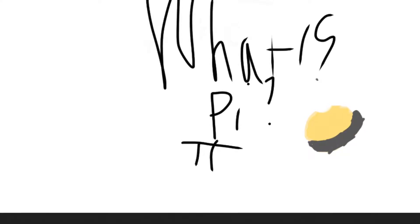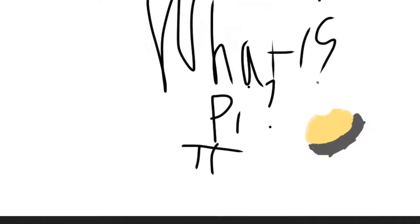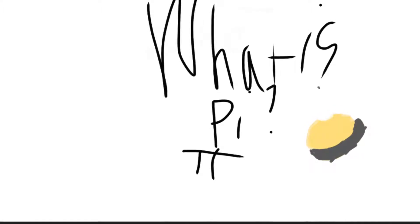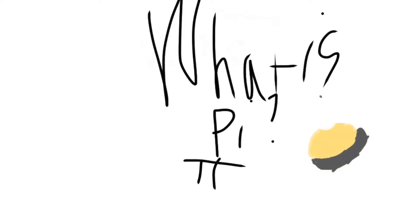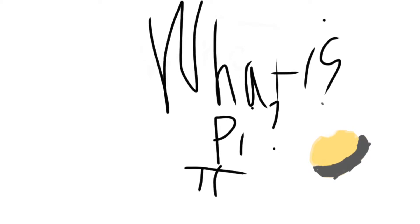Hey guys, my name is Enchupacabra, and today I'll be telling you the concept of pi. So basically, pi is the ratio of a circle's diameter, the length across it, to the circle's circumference, the length all around it. So if you divided the circumference by the diameter, you would get pi.